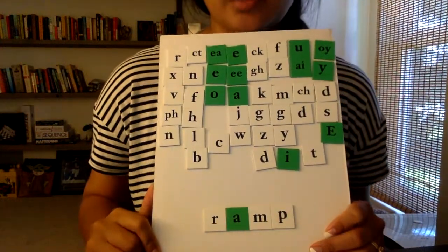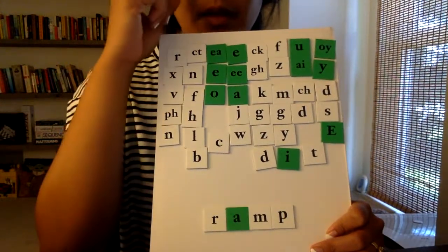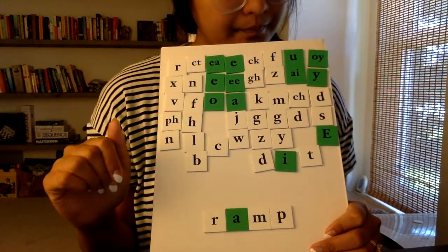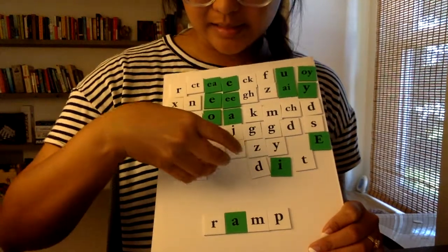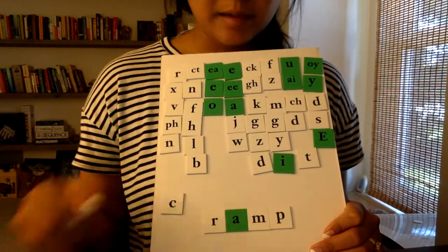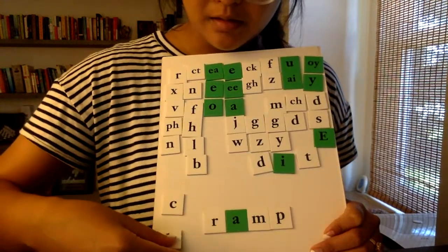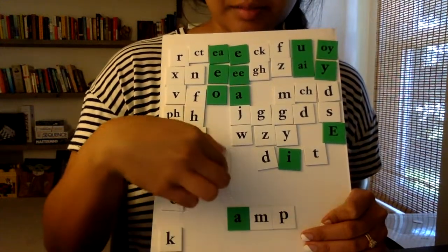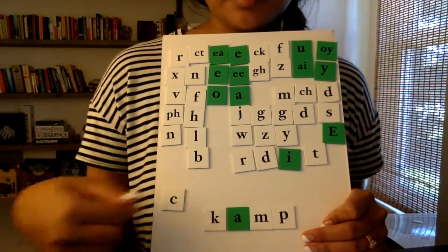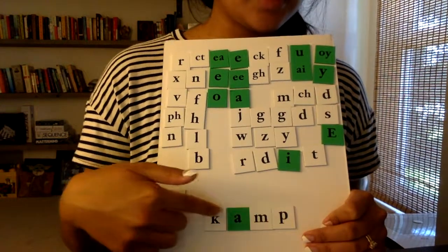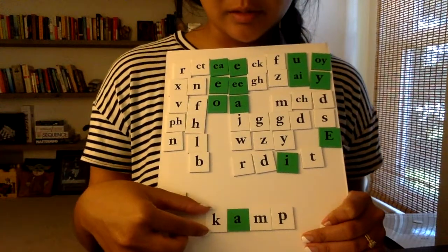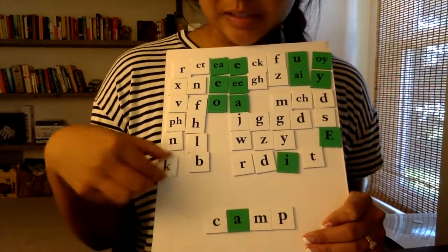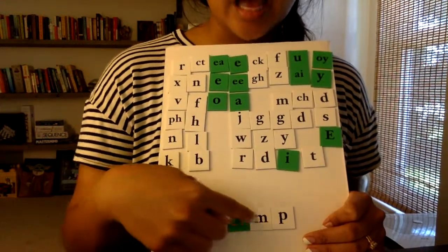The last word we're going to build is 'camp'. I am going to look for the letter that says K. So I know that the C says K, and I also know that the K says K. So let's try them both to see which one is right. K, amp — camp. Let's try it with the K first: K, amp — the sounds tell me it's camp, but that doesn't quite look right. So let's try it with the C. It also says K, amp — camp. And that looks right to me. So when spelling camp, it starts with the letter C: K, A, M, P — camp.